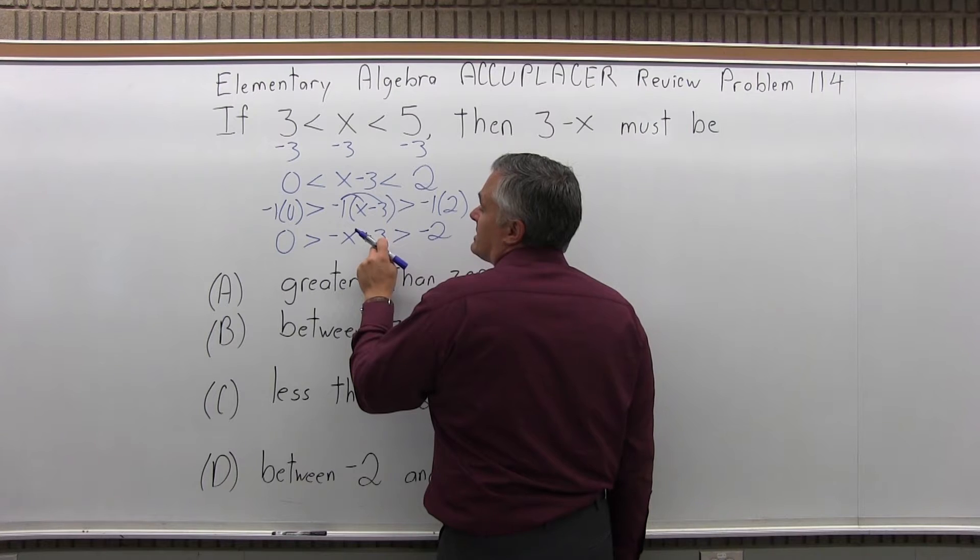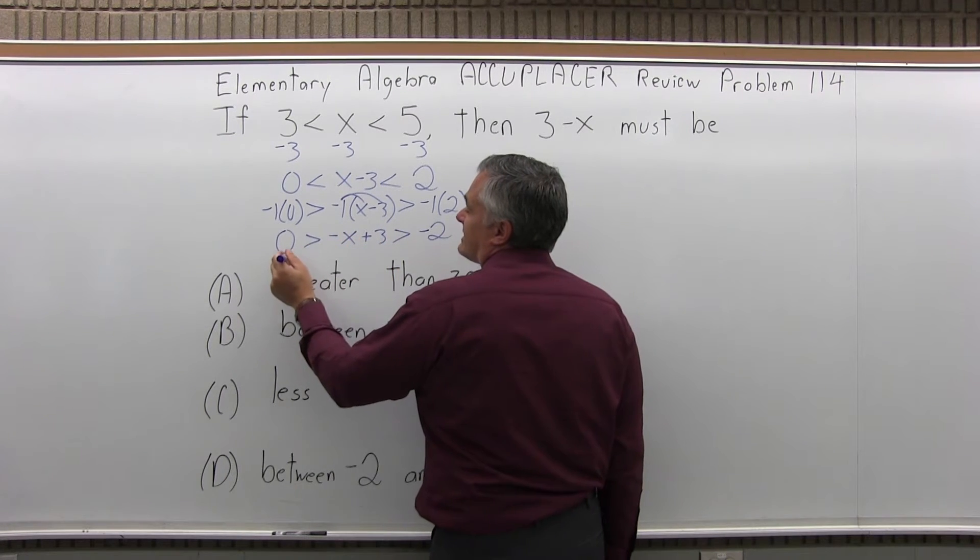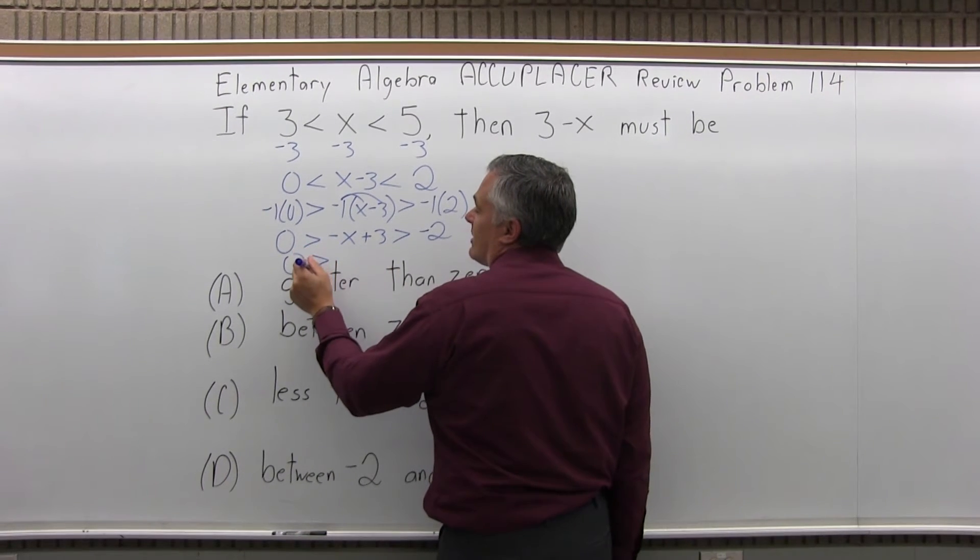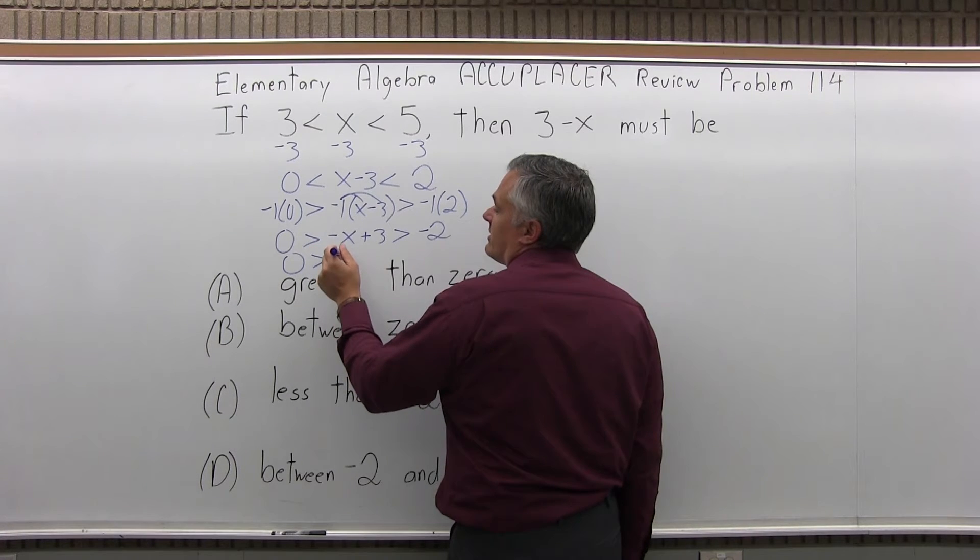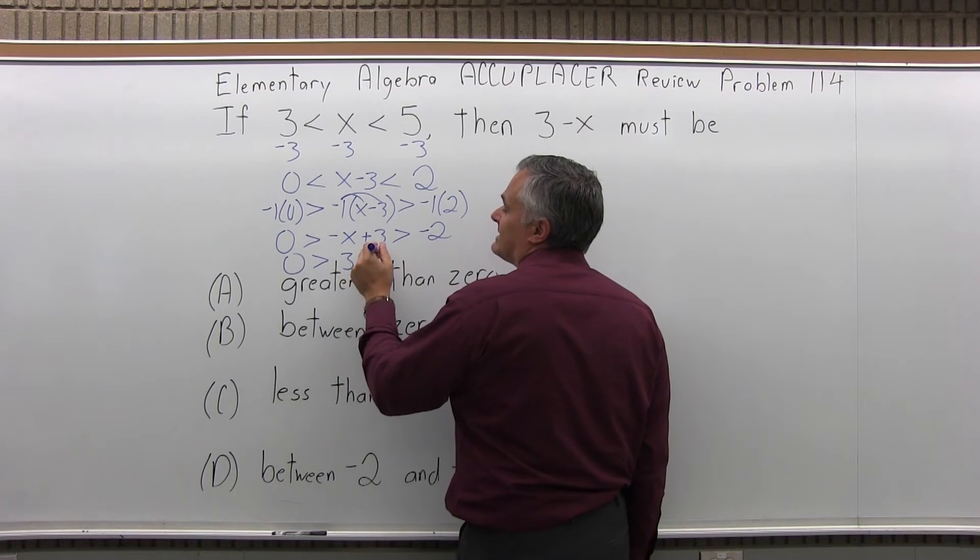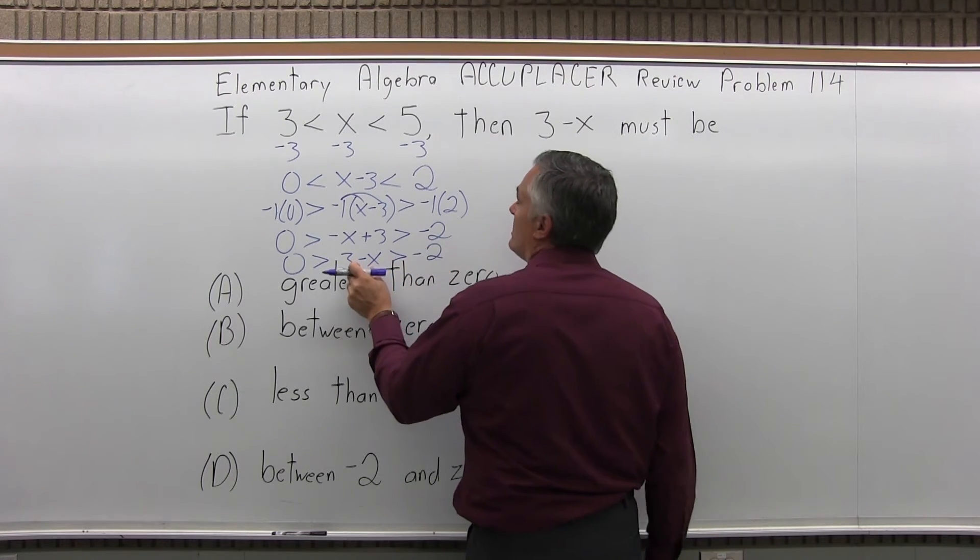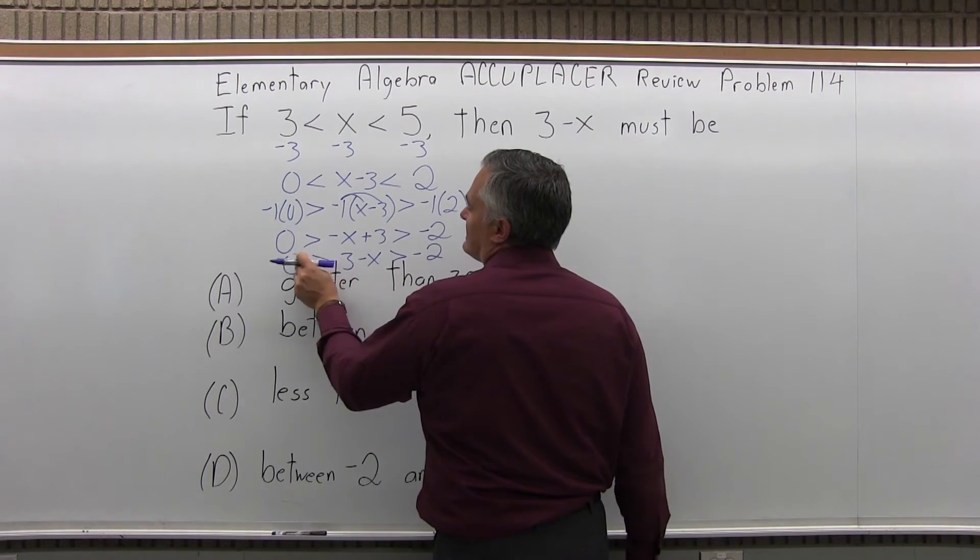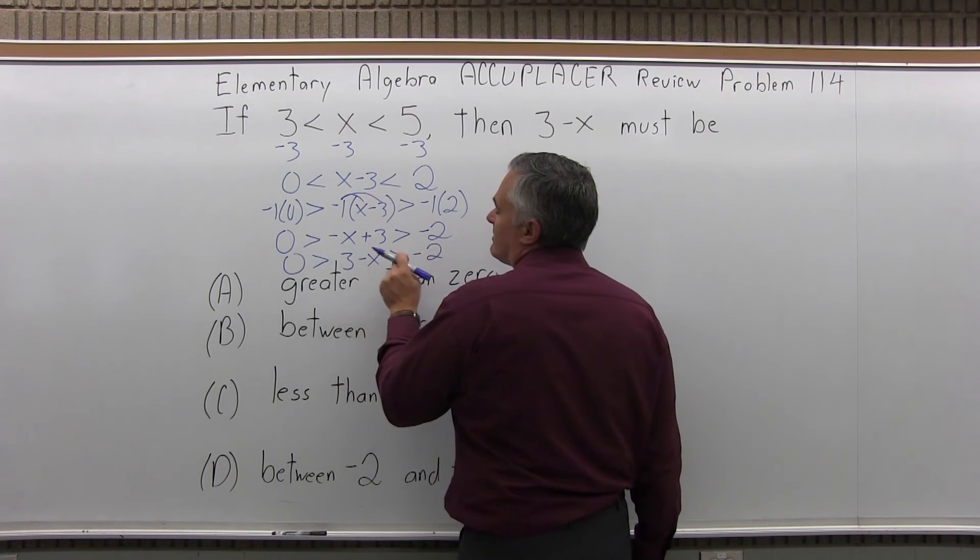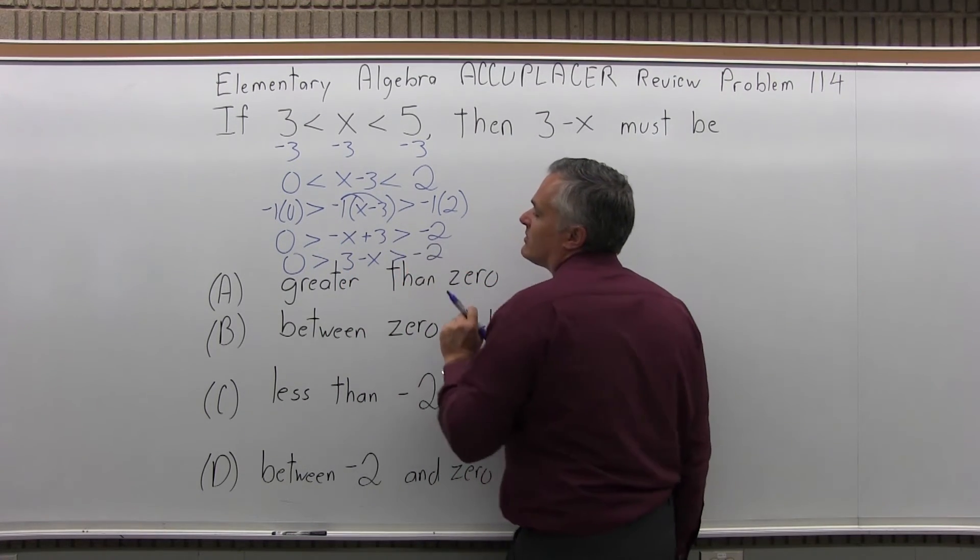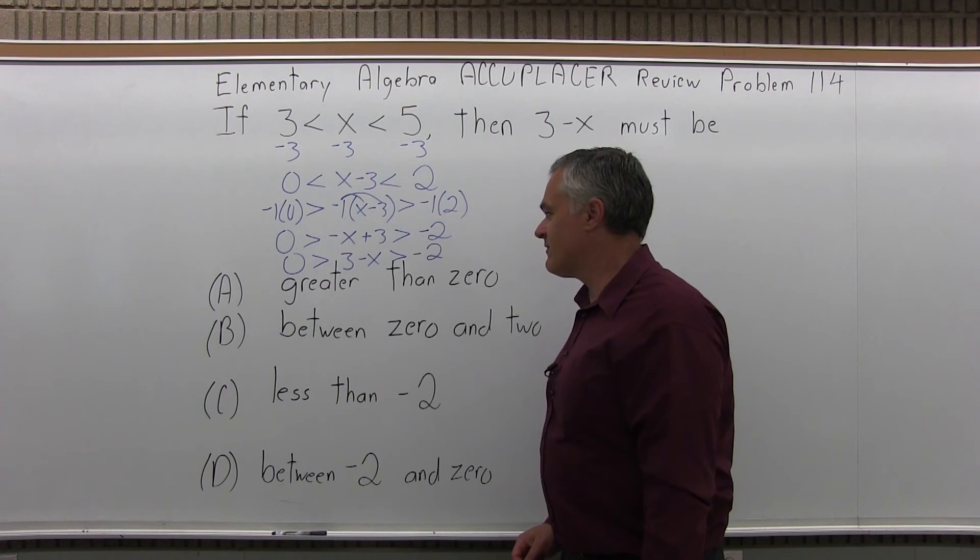And let me write the positive 3 first and the negative x after. So I'll leave my 0, and then I'll put is greater than 3 minus x is greater than negative 2. So now the 3 minus x that they're looking for, it's less than 0. It's going to go into the negative numbers, but it's bigger than negative 2. So it's between 0 and negative 2.